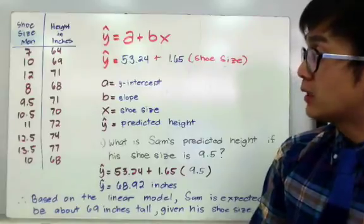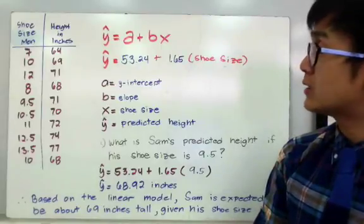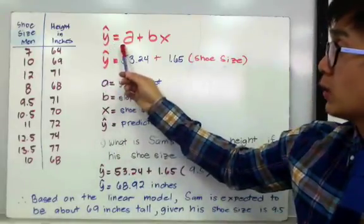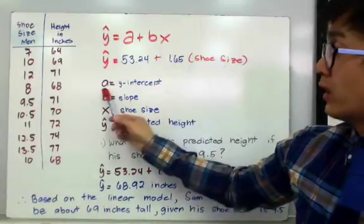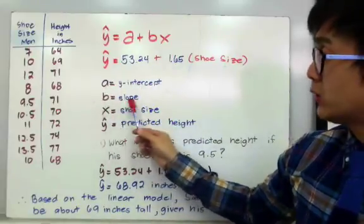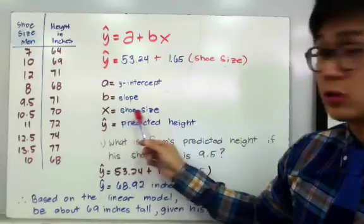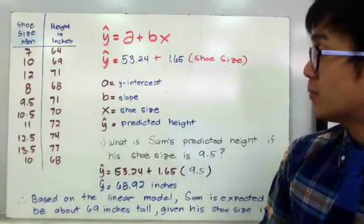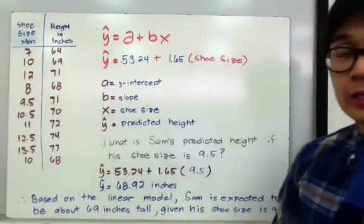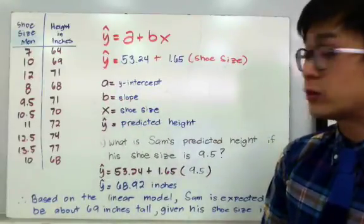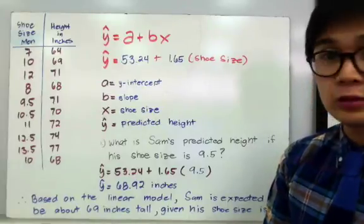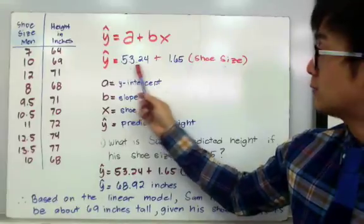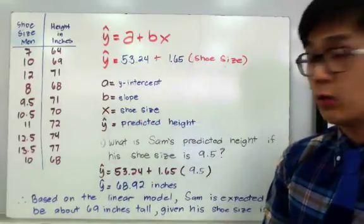Using this data set, we're able to produce a linear model given by the formula y-hat equals a plus bx, where a is the y-intercept, b is the slope, x is the shoe size, and y-hat is the predicted height in inches. After using the calculator or technology, we're able to produce the value of a as 53.24 for the y-intercept and 1.65 for our slope.